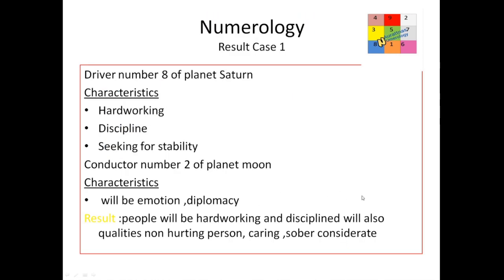Now we will see the results. Driver number 8 is of planet Saturn. The characteristics will be that he will be very hardworking, will have a lot of discipline, and will always be seeking stability. Conductor number is 2, and number 2 is of planet Moon. The characteristic of this person will be that he will be very emotional and diplomatic.